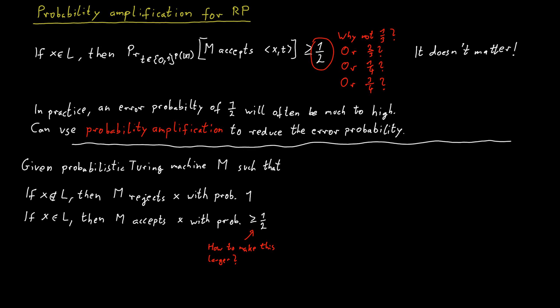Again, maybe pause for a minute and think about this. It's not too hard. At least once you see the solution, I think it will be quite easy. But try to come up with it yourself for a minute. The answer is that we can simply run our probabilistic Turing machine several times.